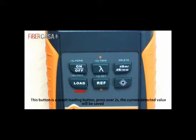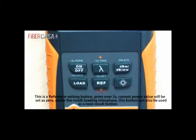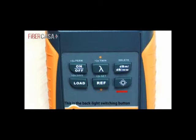This button is the result loading button. Press over 2 seconds, the current detected value will be saved. This is the reference setting button. Press over 2 seconds, current power value will be saved as 0. Under the result loading interface, this button can also be used as the next result button. This is the backlight switching button.